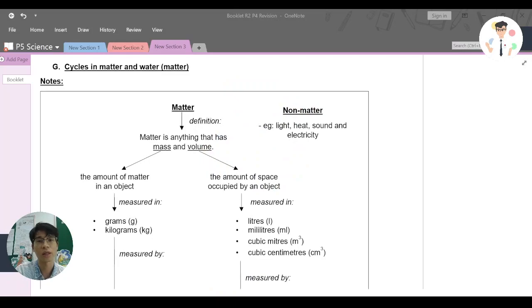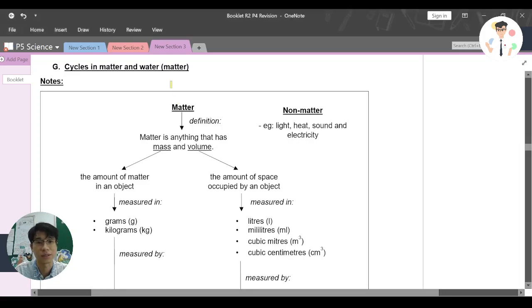Welcome back to digital class. Now we are looking at the cycles in matter and water. Let's try to understand what matter actually is. Matter is just anything that has mass and volume. You might be wondering, is there anything that doesn't have mass and volume?